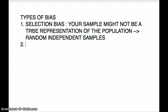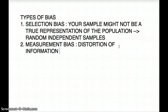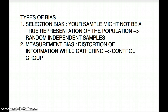The next is measurement bias. Measurement bias is whenever you're gathering information you might be gathering the wrong information or gathering it in the incorrect way — it's the distortion of information while gathering it. You can beat measurement bias by having a control group or a placebo group.